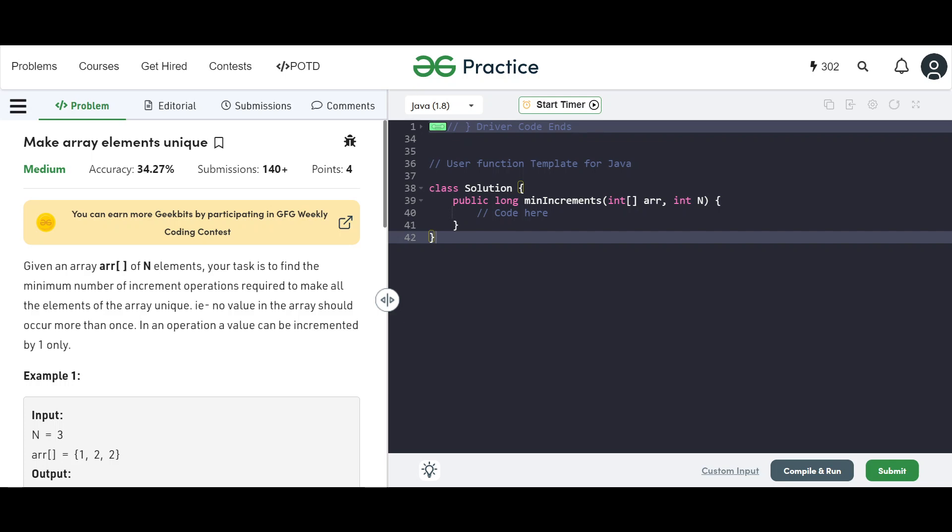Okay, let's try out this problem called 'make array elements unique'. Given an array of N elements, your task is to find the minimum number of incremental operations required to make all elements of the array unique. No value in the array should occur more than once. In an operation, a value can be incremented by one only.